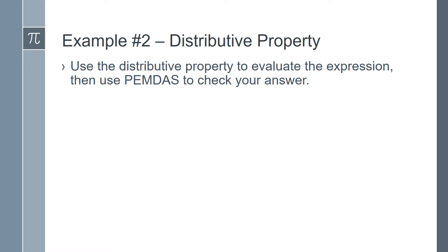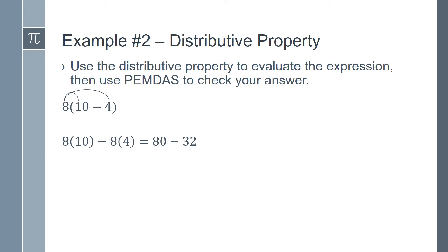Example number 2: We will again use the distributive property to evaluate the expression and use PEMDAS to check our answer. This time the expression will be 8 times (10 minus 4). We start by multiplying 8 times 10 and then 8 times 4. So we find the expression 8 times 10 minus 8 times 4, which equals 80 minus 32. 80 minus 32 equals 48, so 8 times (10 minus 4) equals 48.